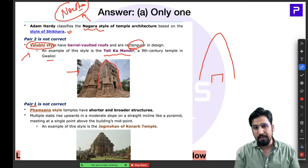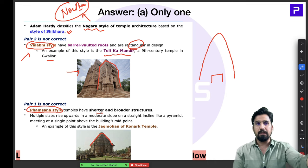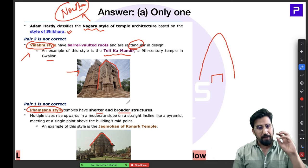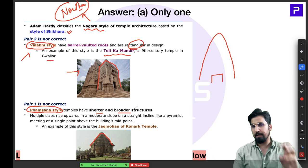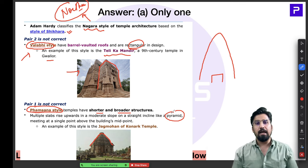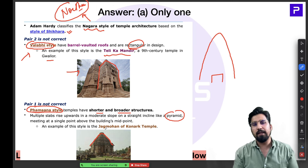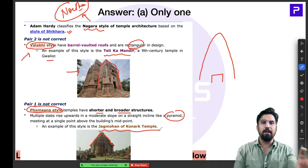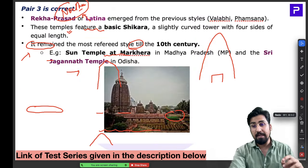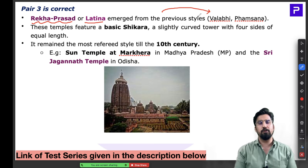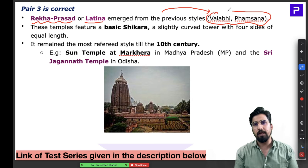Another type is the Famsana style. It is comparatively shorter and broader, with a pyramidal shape that meets at a single point above the midpoint of the building. The best example is the Jagamohana of the Konark temple, built in the Famsana style. There is also another sub-category called Latina, famously known as the Rekha Prasad style, which is influenced by both the Valabhi and Famsana styles.